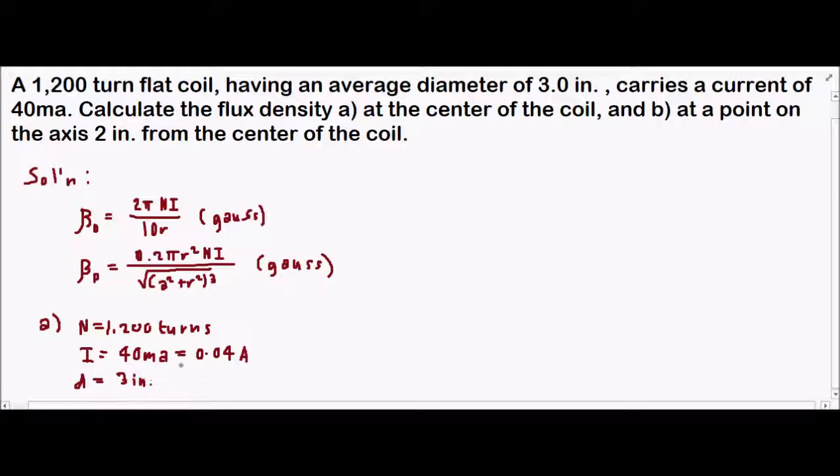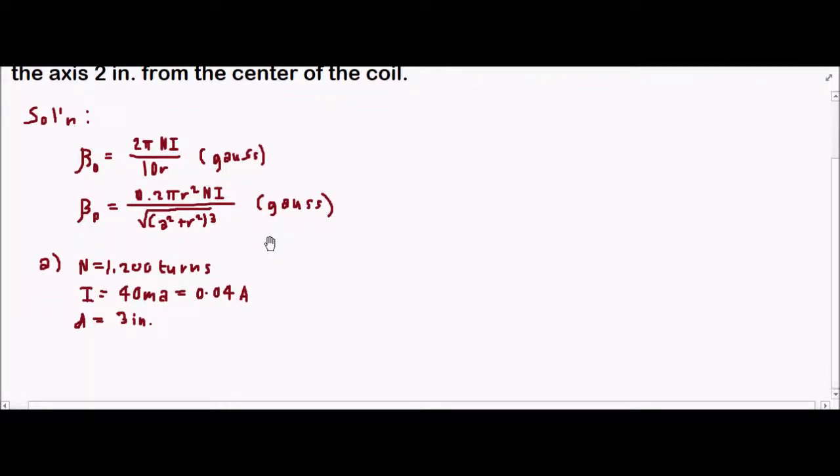Because we are considering only the radius, our radius is half the diameter, so we have 1.5 inches. We need to convert this into centimeters because gauss is maxwells per square centimeter. We have 2.54 centimeters is 2.1 inch, so 1.5 times 2.54 equals 3.81 centimeters.